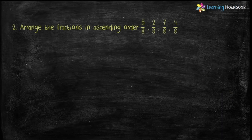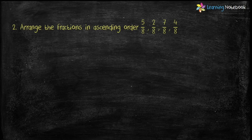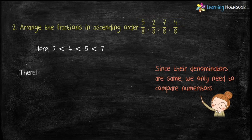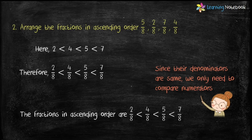Question number 2: arrange the given Fractions in ascending order. Ascending order means arranging from smallest to biggest. Since their denominators are same, we only need to compare their numerators. Here, 2 is less than 4, 4 is less than 5, and 5 is less than 7. Therefore, Fractions in ascending order are: 2 by 8 is less than 4 by 8, 4 by 8 is less than 5 by 8, and 5 by 8 is less than 7 by 8.